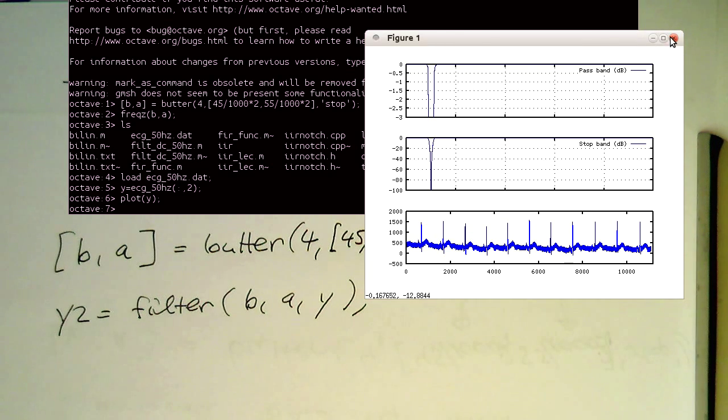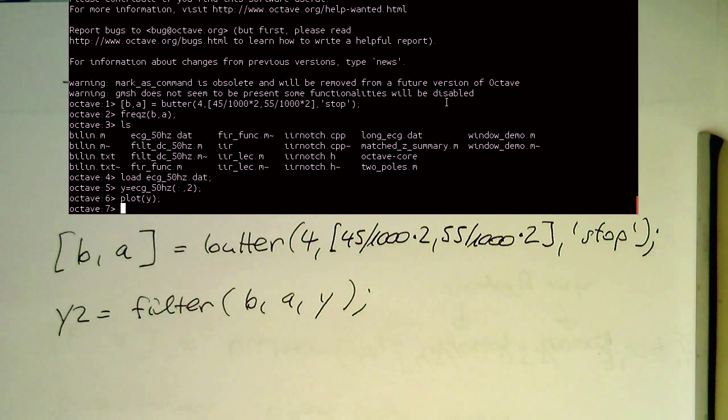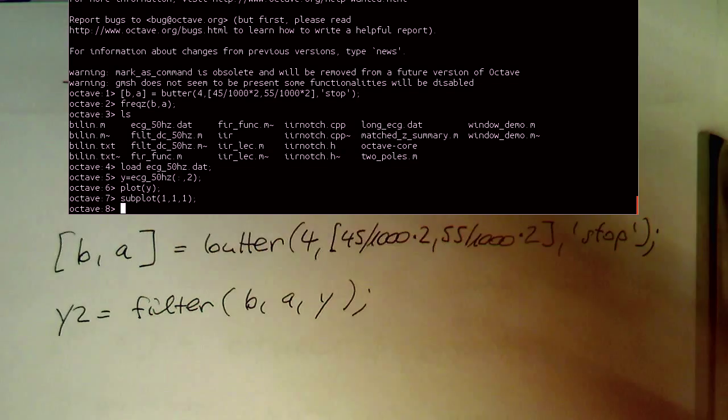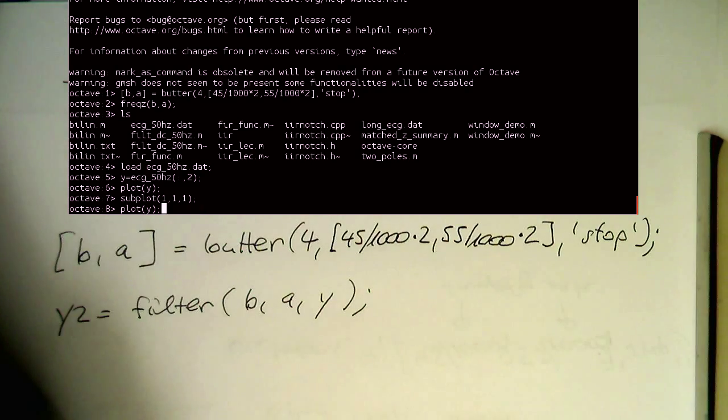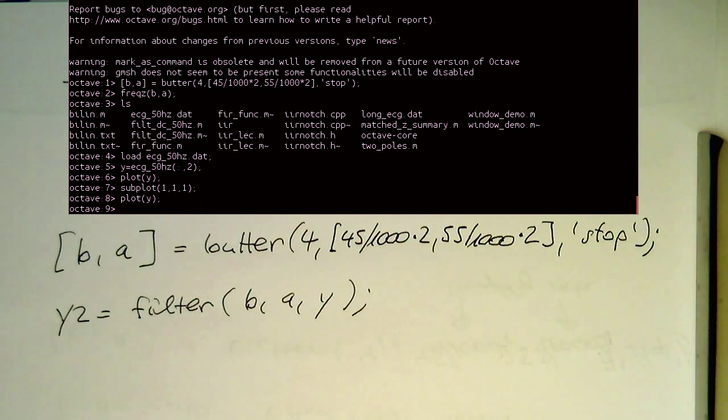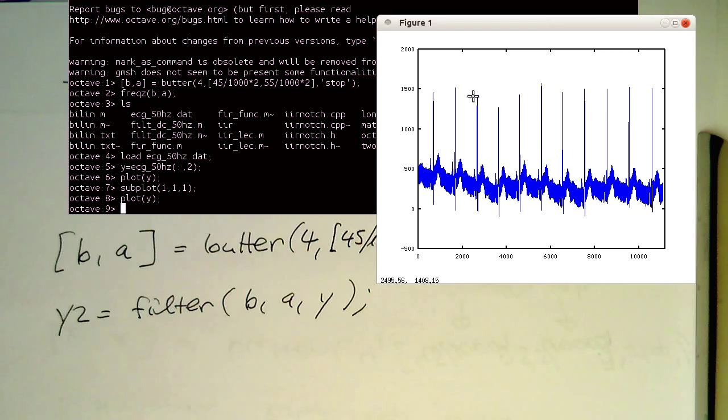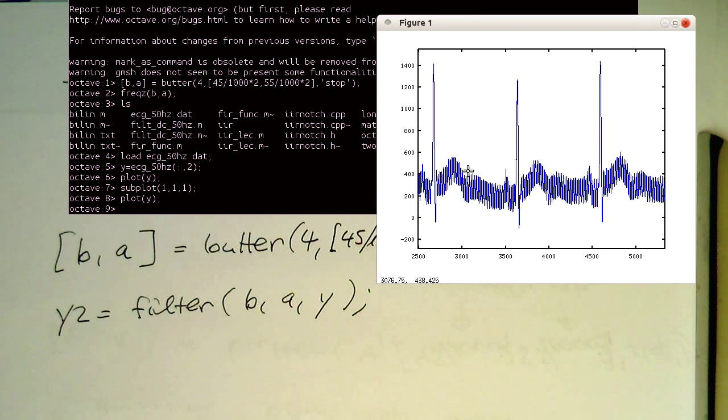Let's just close this window here and get rid of the subplot, just to see the ECG a bit in greater detail here. So let's zoom in and we see we have quite a lot of 50 Hz noise in this signal.